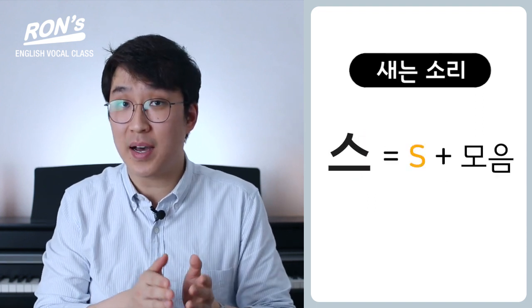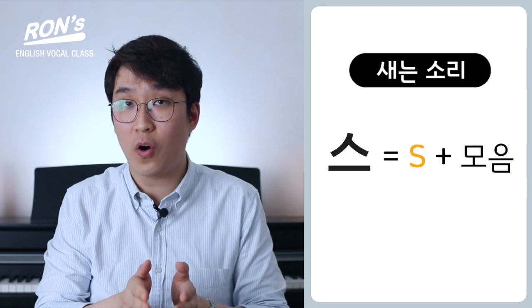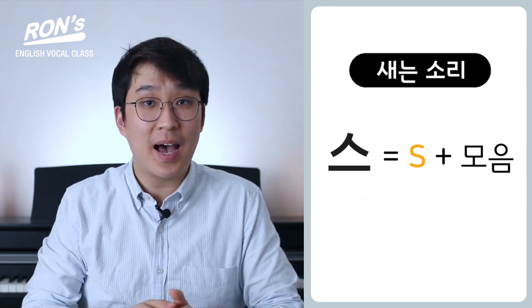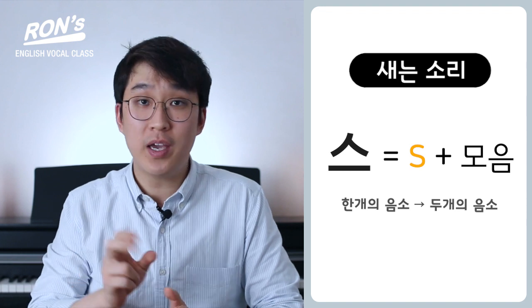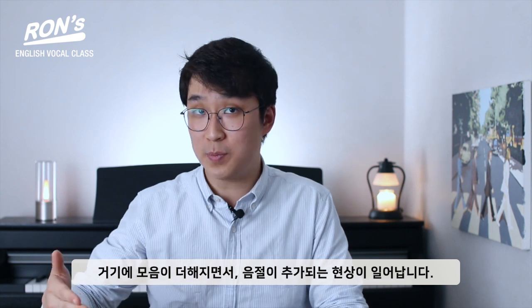무성음이기 때문에 음 혹은 목소리가 들어가지 않고 S 하면서 발음이 유지되는 성향을 가지고 있다는 것을 볼 수 있습니다. 하지만 이러한 간단한 발음을 주로 어떤 방법으로 틀리나요? S 발음을 무성음만으로 발음하는 게 아니라 많은 분들은 S 하고 모음을 더해서 발음합니다. 두 번째 발음 S는 S 발음에 모음이 더해진 발음이라는 것을 볼 수 있습니다. 즉, 한 개의 음소가 두 개의 음소가 되는 거죠.